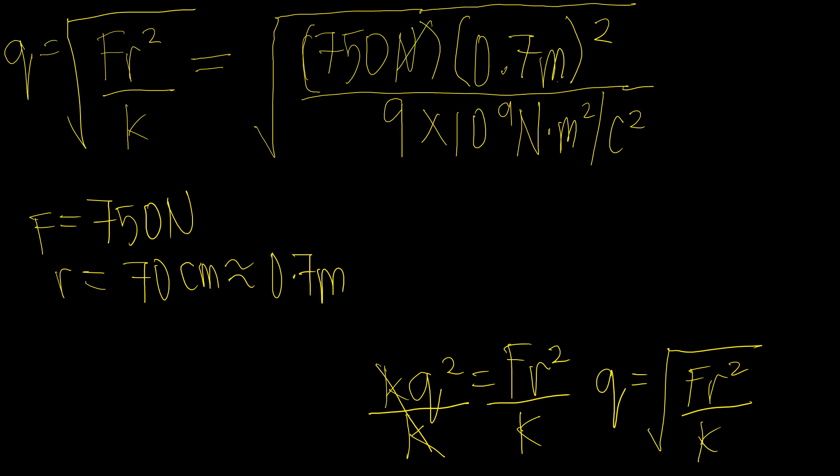So cancel out na natin yung mga units. So using our calculator, you can get 2.02 times 10 raised to negative 4 coulombs. So ito yung value ng charge natin.